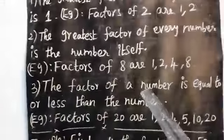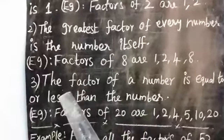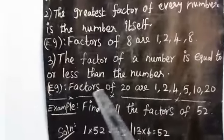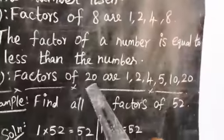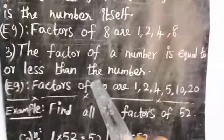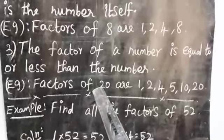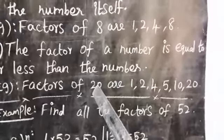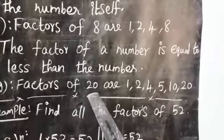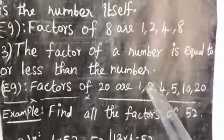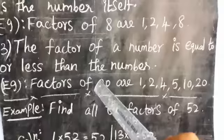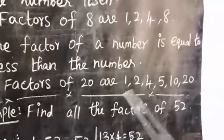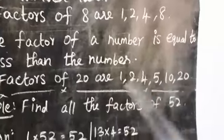Third property: every factor of a number is equal to or less than the number. Example — factors of 20: 1 divides it, 2 divides it, 3 does not divide it, 4 divides it (4 fives are 20), 5 divides it (5 fours are 20). 6, 7, 8 do not divide it exactly. Then checking up to 20, so the factors of 20 are 1, 2, 4, 5, 10, and 20.